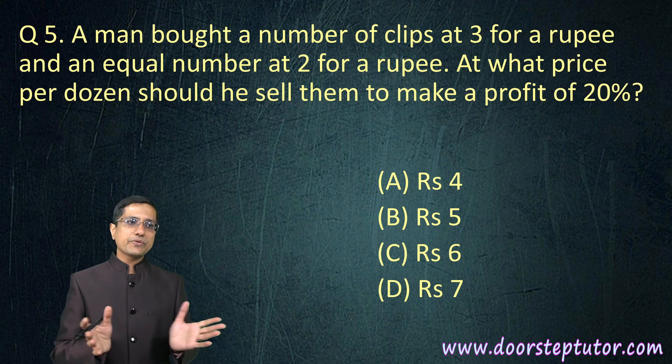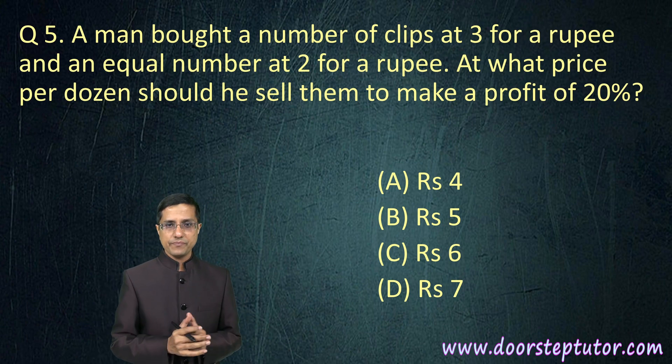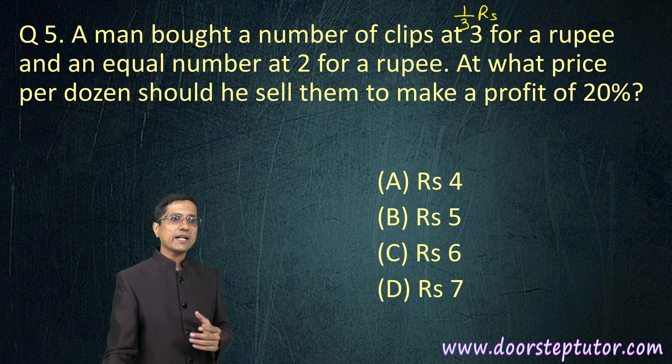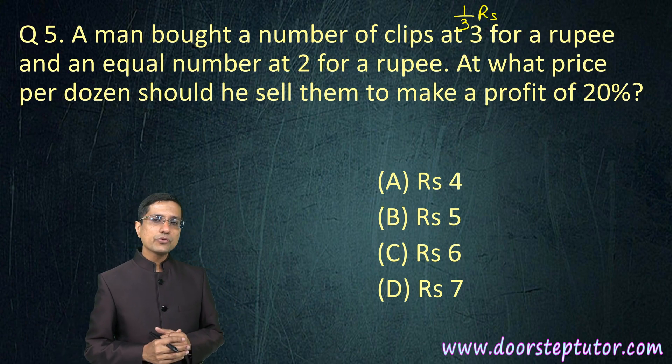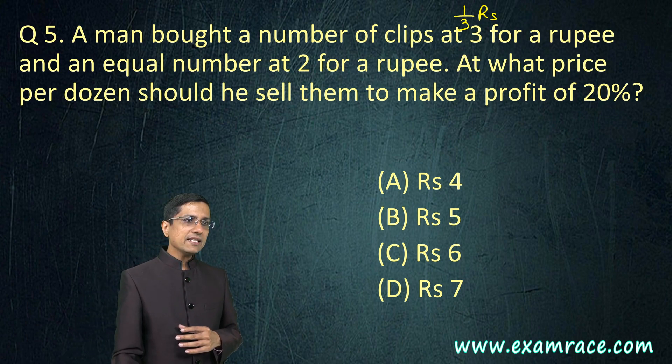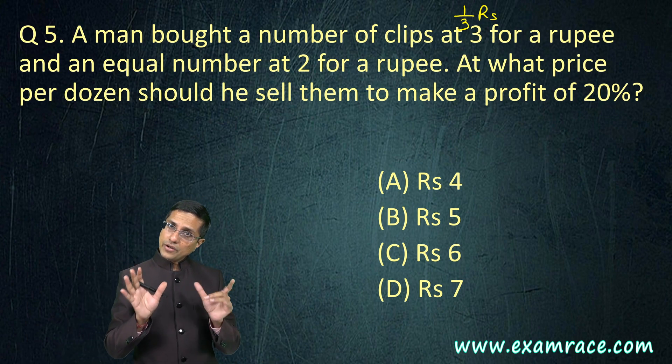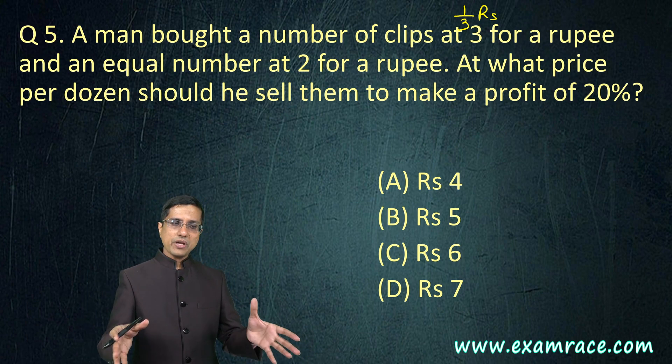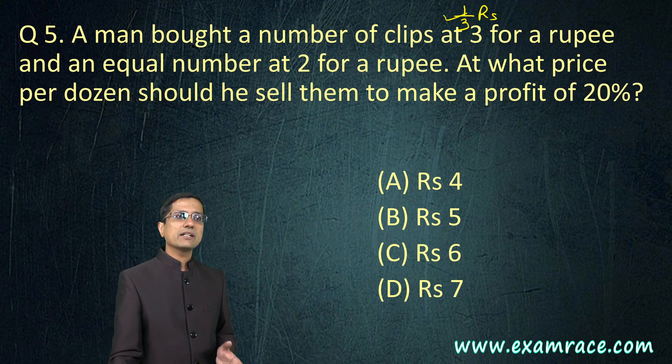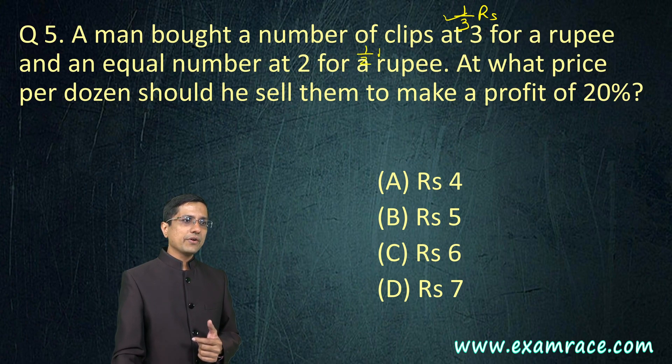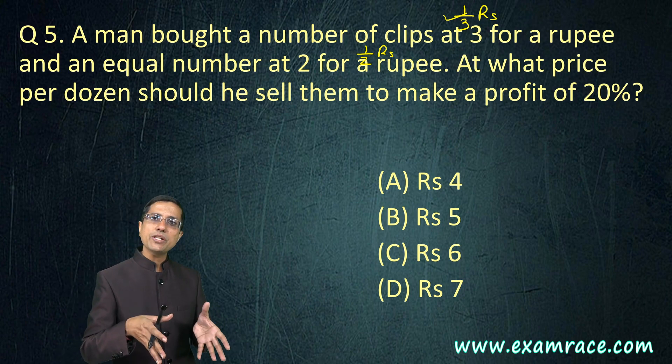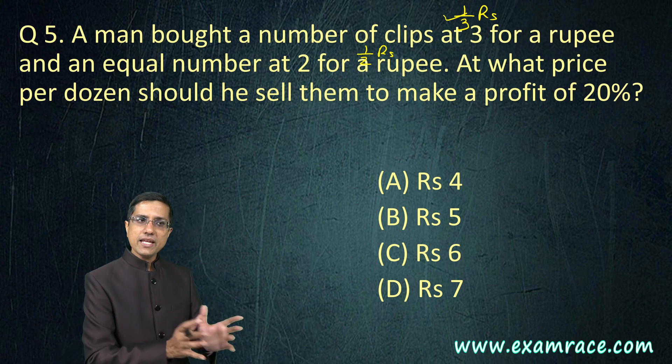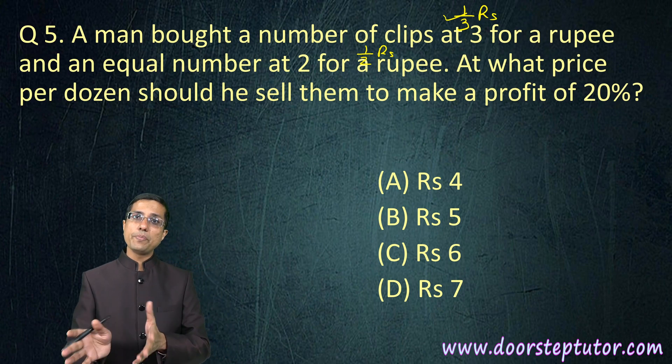A man bought a number of clips at 3 for a rupee. So the cost of one clip is 1 by 3 rupees because in a rupee 3 are coming. Same number of clips - whatever that number is we don't know, that is not important - but half of them have been bought at this rate 1 third rupees, and the other half two for a rupee. Two for a rupee means half rupees per clip. Half of the clips have been bought at one third of a rupee, half have been bought at rate of half rupees.